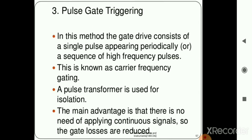The most widely used method is pulse gate triggering. Pulse transformers can be used for isolation between the control circuit and power circuit. The main advantage is that there is no need to apply continuous signals, so gate losses are reduced. With DC, the voltage must be applied continuously causing more power loss; with AC, there are positive and negative peaks causing drawbacks. With pulse gate triggering, we generate pulses only for the required duration — whenever we need to start the device, we give the pulse. That is the key advantage of pulse gate triggering.